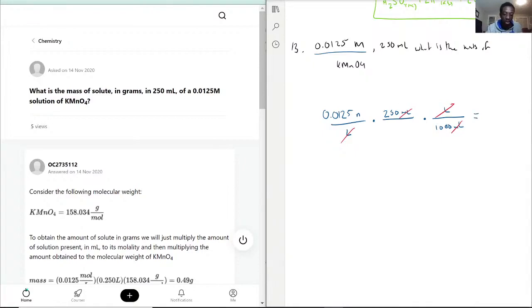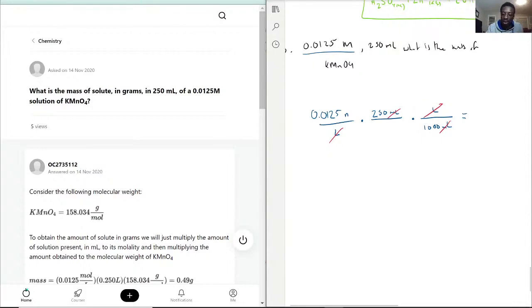So by multiplying by 250 and dividing by 1000, 0.0125 times 250 divided by 1000, we get that we actually have 0.003125 moles of potassium permanganate.